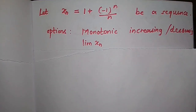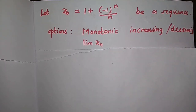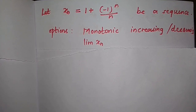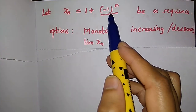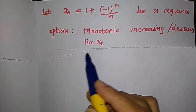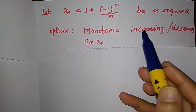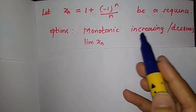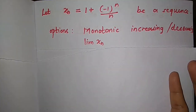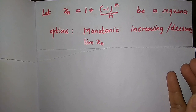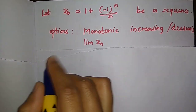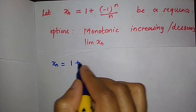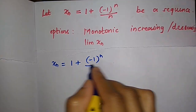Hello friends, in this video I am going to solve problems from IIT JAM 2020 Mathematics. The first problem: we have a sequence xₙ = 1 + (-1)ⁿ/n and we have given some options like xₙ is monotonic increasing or decreasing, or some option related to the limit of xₙ. We will analyze this sequence.